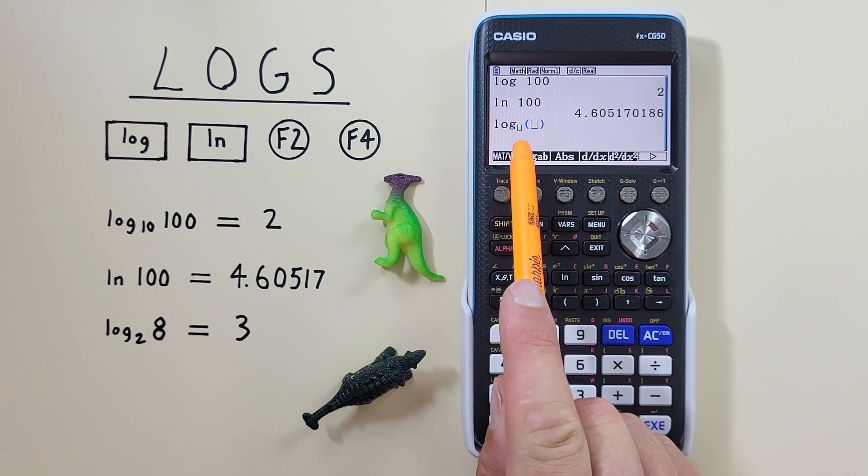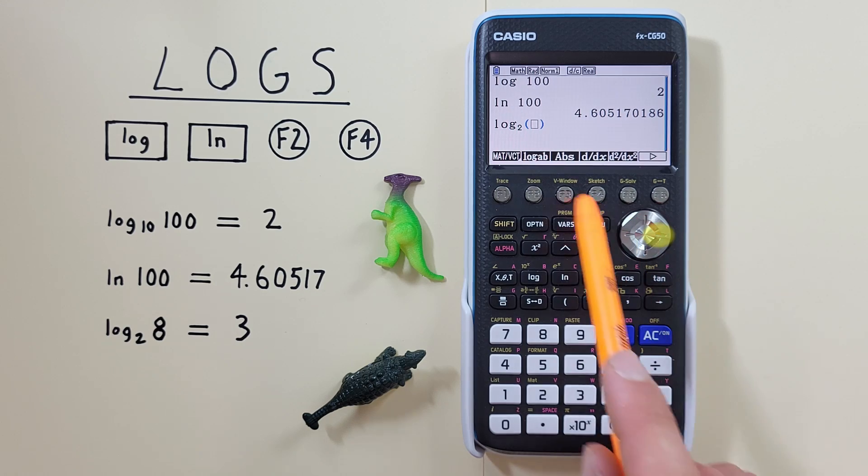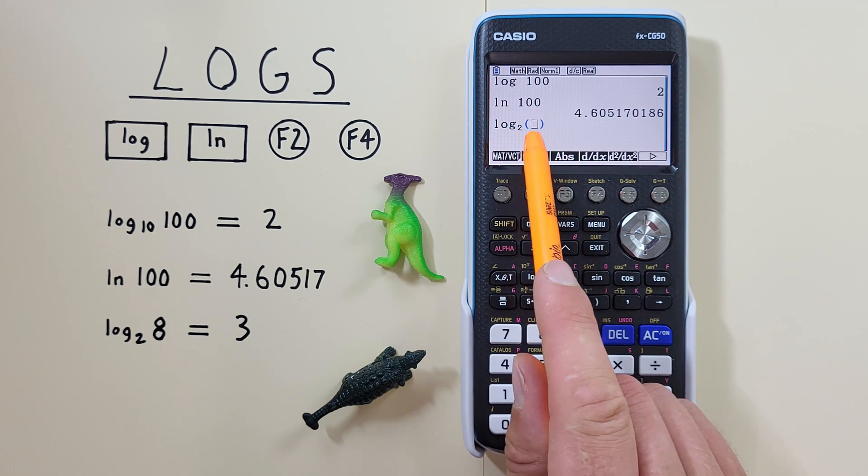The first smaller box is our base. So if we have a base 2, we put 2 there and then scroll to the right once so that our cursor is in the larger box.